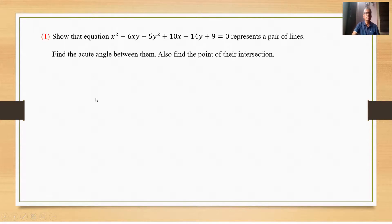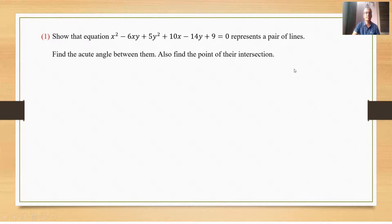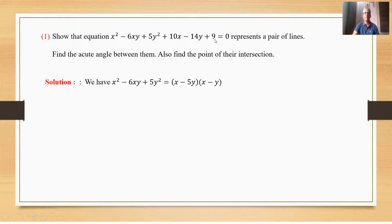Now we take problems related to the general second-degree equation in x and y. Problem: Show that the given equation represents a pair of lines, find the acute angle between them, and also find the point of intersection. We need to show that the general second-degree equation in x and y represents a pair of lines.